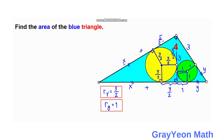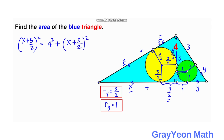Notice that the triangle circumscribing the yellow circle is a right triangle, so we can apply the Pythagorean theorem. The hypotenuse is x + 5/2, so (x + 5/2)² = 4² + (x + 3/2)². Expanding: x² + 5x + 25/4 = 16 + x² + 3x + 9/4.